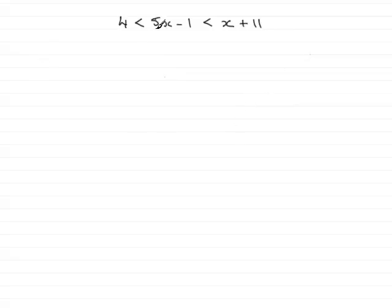So I'll show you how. Start with the inequality 4 < 5x - 1. We add 1 to both sides, and we have 4 + 1, which is 5, and that's less than 5x.